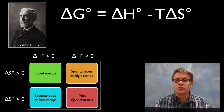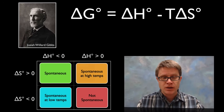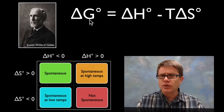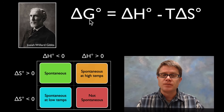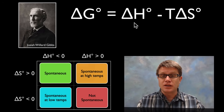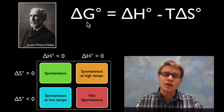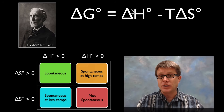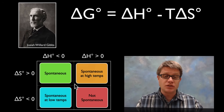Now we can come to Gibbs free energy and the equation, which should make sense at this point. Josiah Willard Gibbs' equation: delta G on the left — if it's less than zero, it's spontaneous; if it's greater than zero, it's non-spontaneous. This grid makes total sense now. A decrease in enthalpy gives a negative delta H, and an increase in entropy means delta S is positive; since we're subtracting it, that gives a negative delta G. For the non-spontaneous case, delta H is positive and delta S is negative — subtracting a negative makes it positive, so delta G is greater than zero.